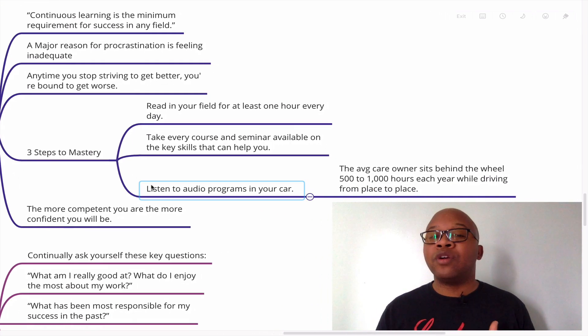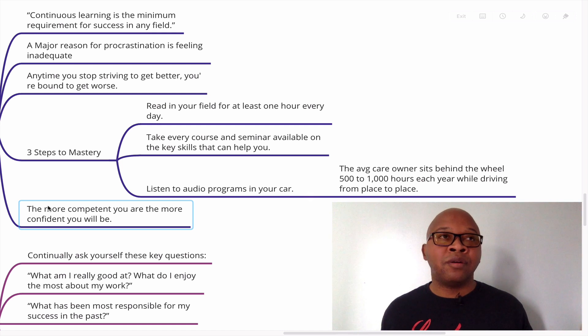Number two, take every course and seminar available on the key skills that can help you. In fact, one of my early coaches many years ago shared with me that I should set a goal to go to a seminar every 90 days. So every 90 days, I'm going to a seminar or enrolling in a course to upgrade my skills. And I thought that was very good because that just keeps you going, keeps you working, keeps you refining your tools, refining yourself, learning more and getting better. So take every course and seminar available on the key skills that can help you.